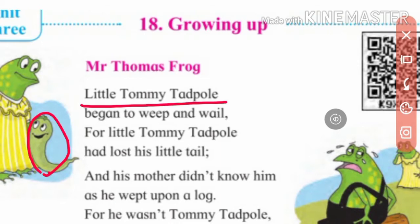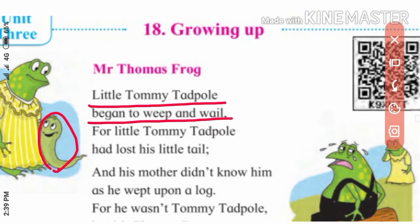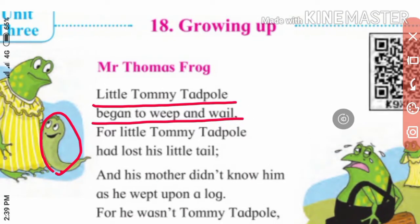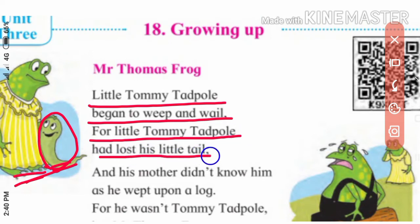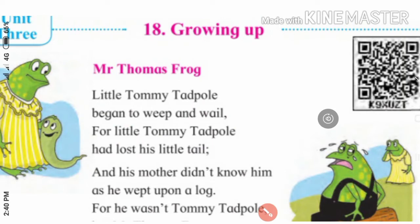Let's understand the first stanza. 'Little Tommy Tadpole began to whip and wail.' Whip and wail means to cry and make a loud sad noise. In this picture, little Tommy Tadpole had lost his little tail — he has lost his tail but has no arms or legs yet.